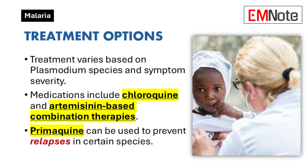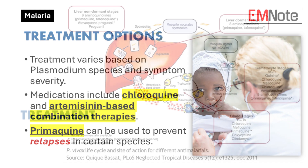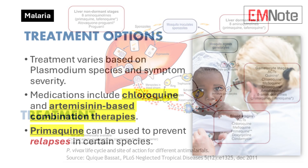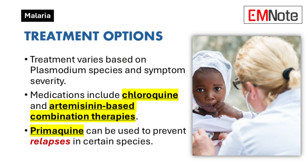Treatment Options: Treatment varies based on the Plasmodium species involved and the severity of symptoms. Common medications include chloroquine for sensitive strains, artemisinin-based combination therapies for resistant strains, and primaquine for preventing relapses in certain species.